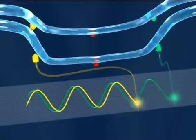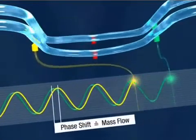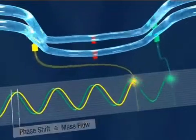A phase shift occurs between the first and the second sensor. The mass flow rate is derived from this phase difference.